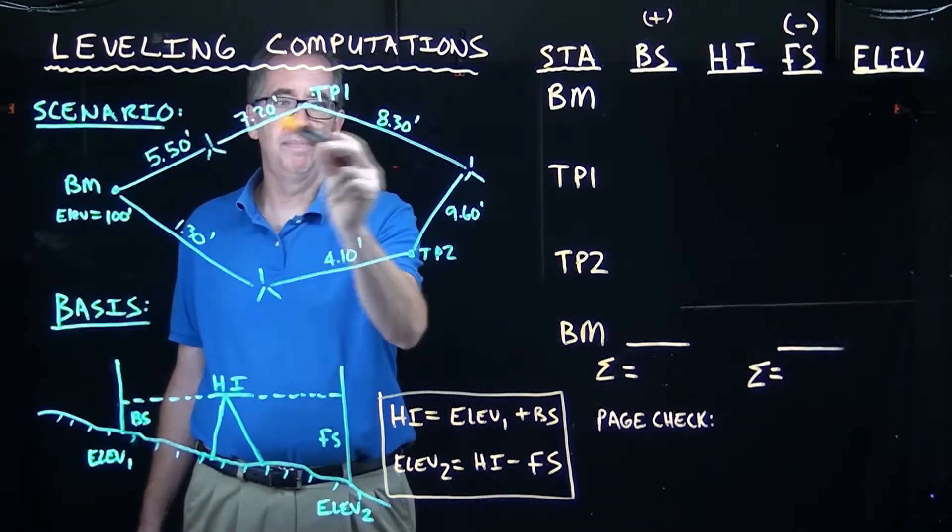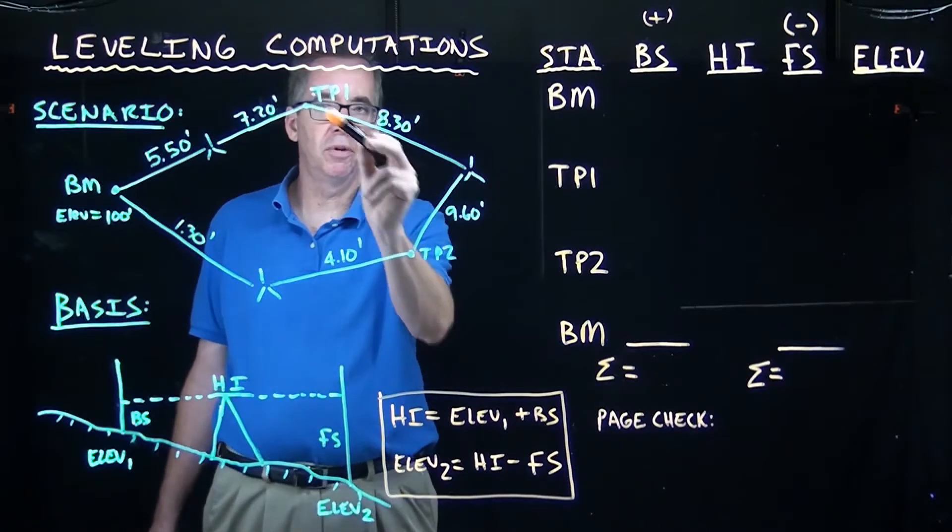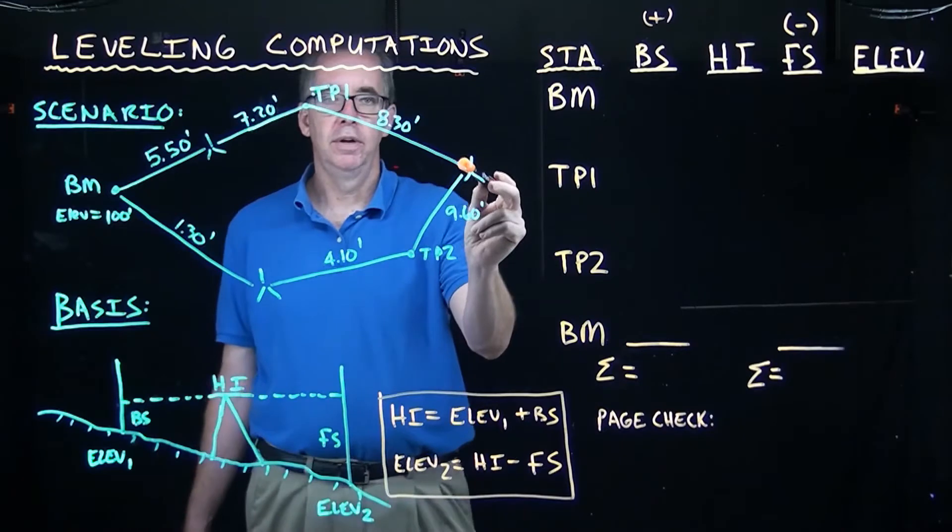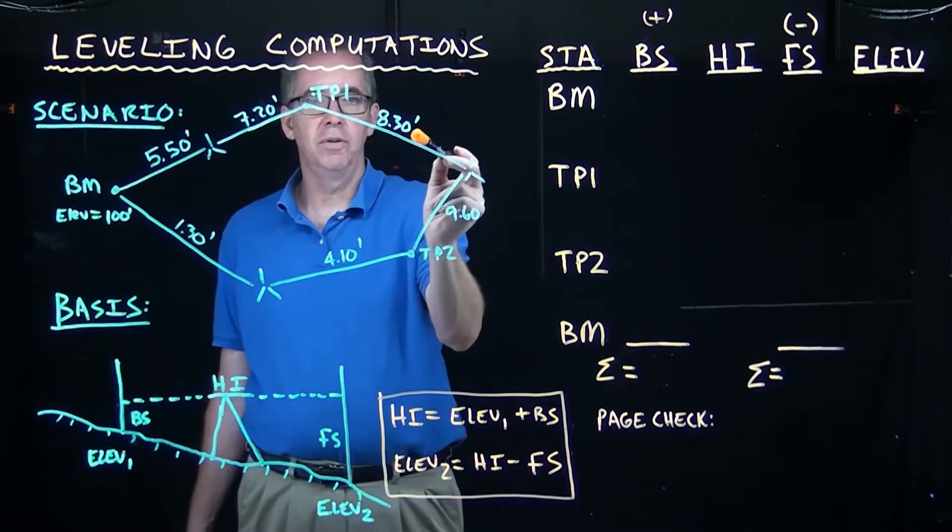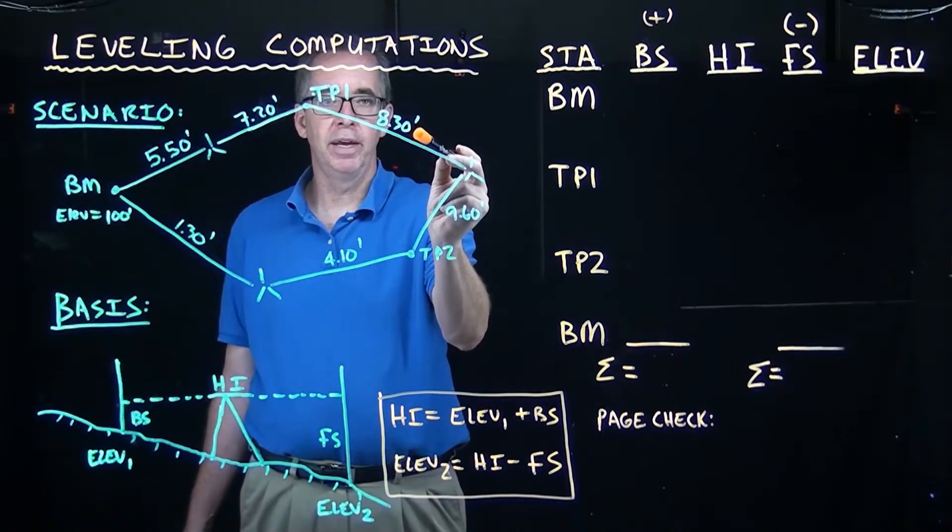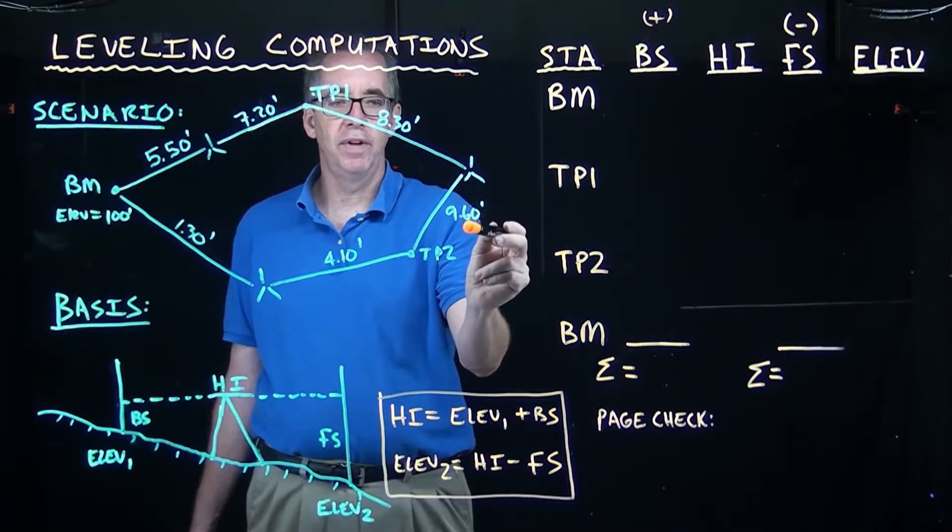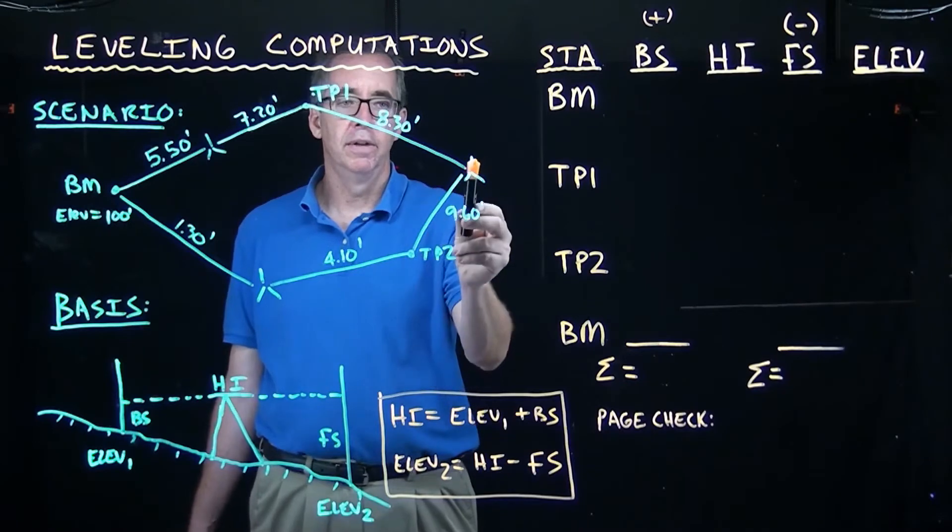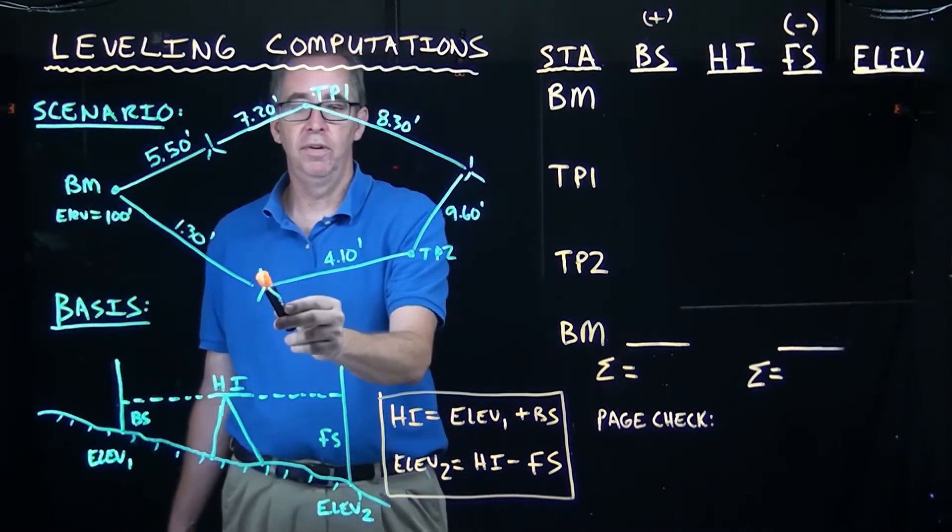I move my tripod over here, somewhere between turning point one and two. Once I have it leveled, I shoot back and do a backside and get 8.3. I do a foresight, 9.6, to that turning point. Keep my rod there.